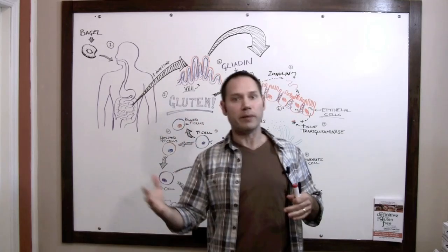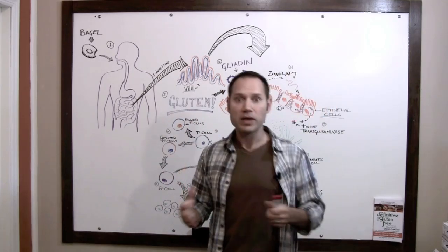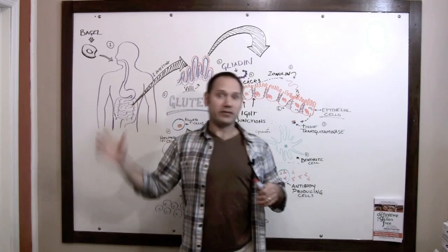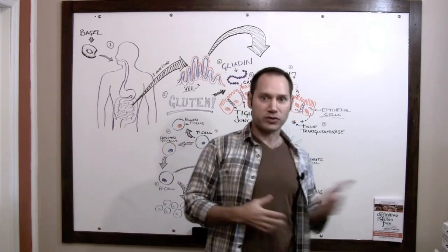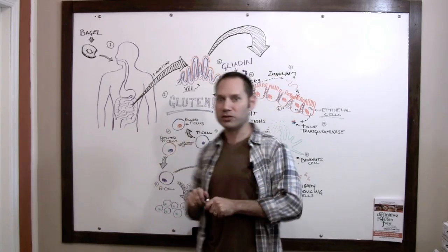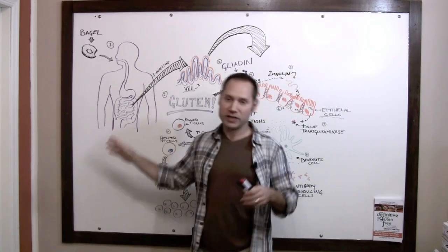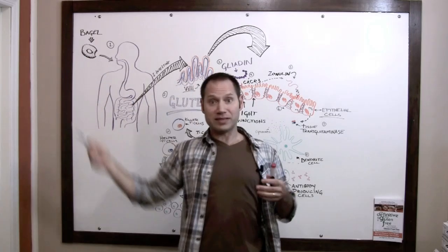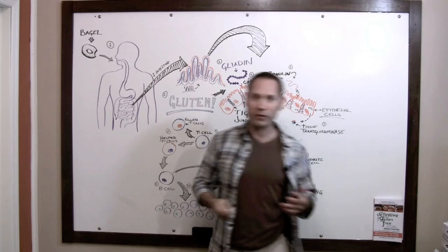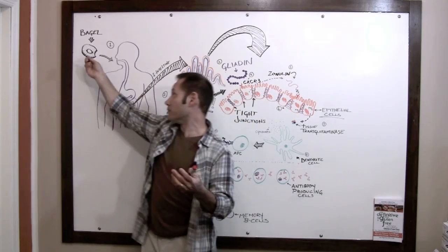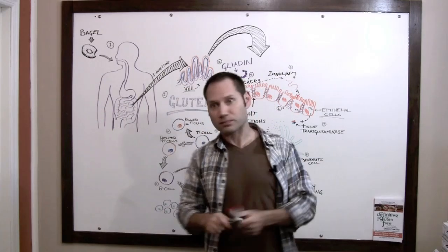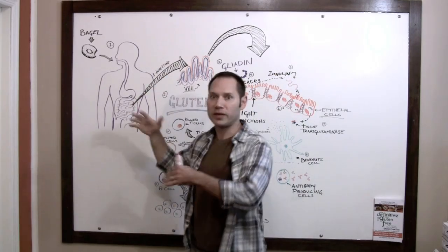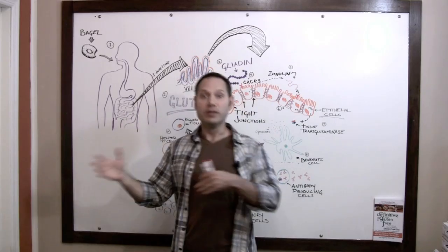Let me describe the landscape of the gut a little bit. The first thing you have to understand is that the inside of your digestive tract is actually the outside of your body. I know that sounds a little counterintuitive, but think of your digestive tract — looking at this bagel as an example. The hole of the bagel, the center of the bagel — is that the inside or the outside of the bagel? Of course, it's the outside. So it's the same thing with your digestive tract. It's really the outside of your body, and you don't want things that belong outside your body to be inside your body.